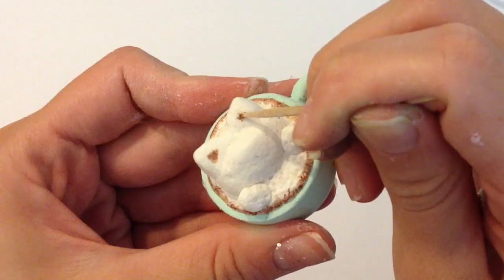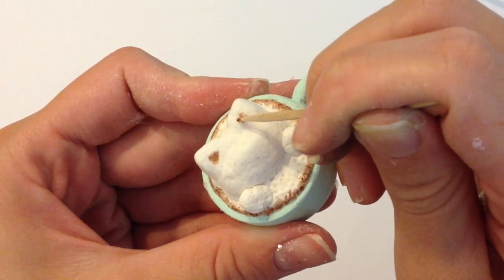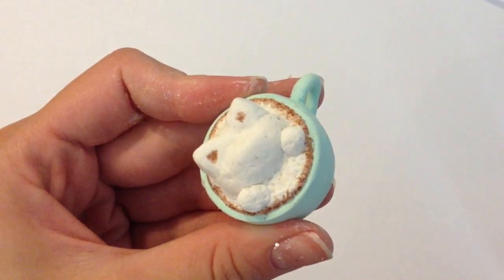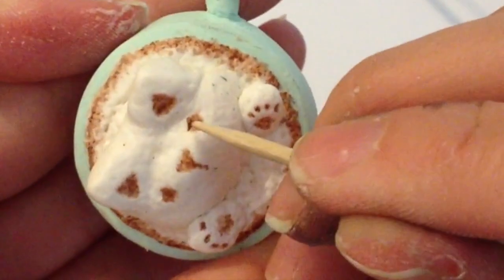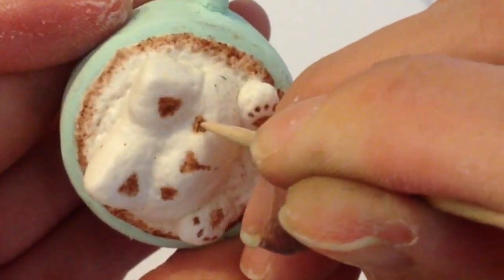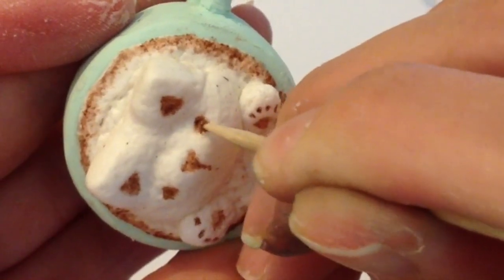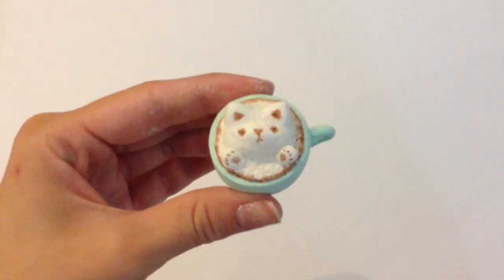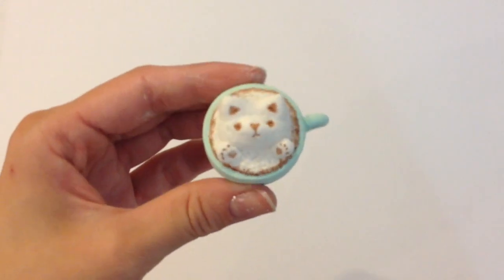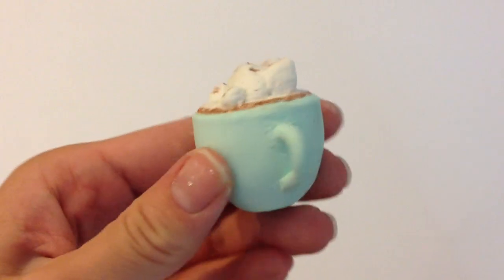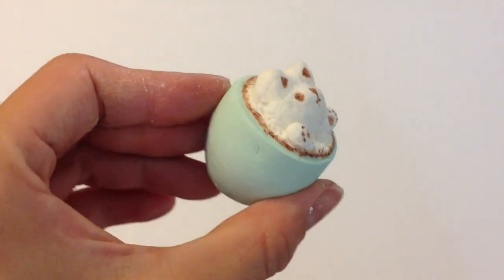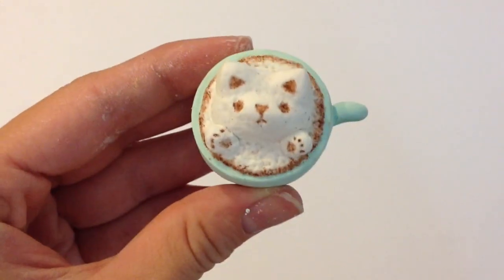And since you already pre-baked your cup, you don't have to worry about the chalk coloring the nice mint colored cup that you have here. It will only color the white clay, so make sure you spend extra time to not get chalk fallout all over your clay piece. Now that I'm completely happy with how my little Coconut character turned out, I'm going to bake this in the oven again for another 20 minutes at 250 degrees Fahrenheit.